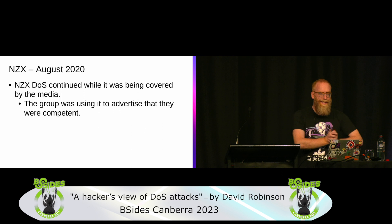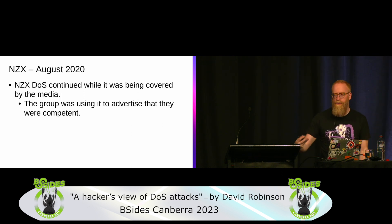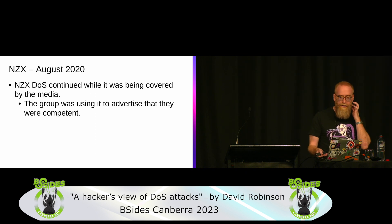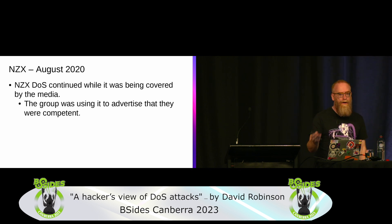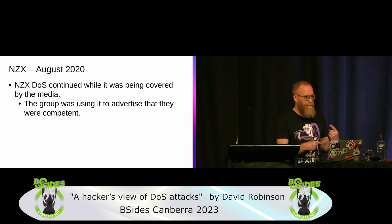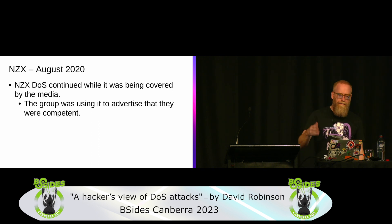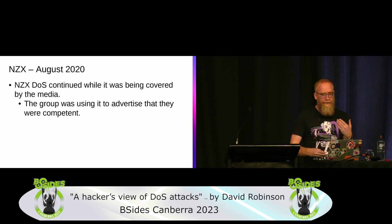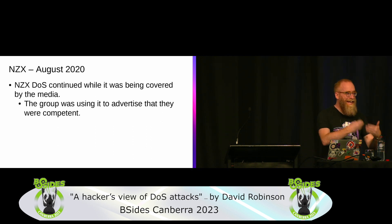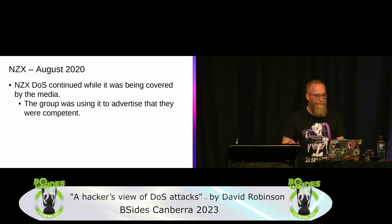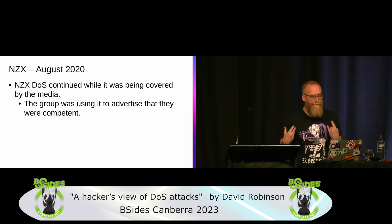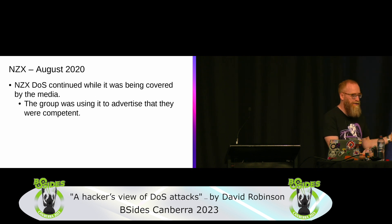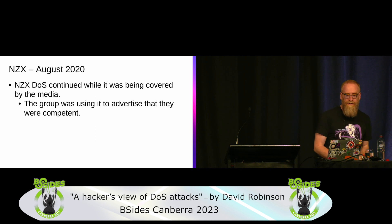Back in August 2020, the New Zealand Stock Exchange had a long series of DoS attacks over a few weeks. This was a blackmail-type attack — pay Bitcoin or keep getting DoSed. The catch-22 was NZX refused to pay, but because it was getting so much media coverage, the attackers had to keep going to maintain their credibility. The DoS crew used all that media coverage and the sustained attack as a badge of honour — proof they could DoS well — which they could point to when demanding money from other targets.